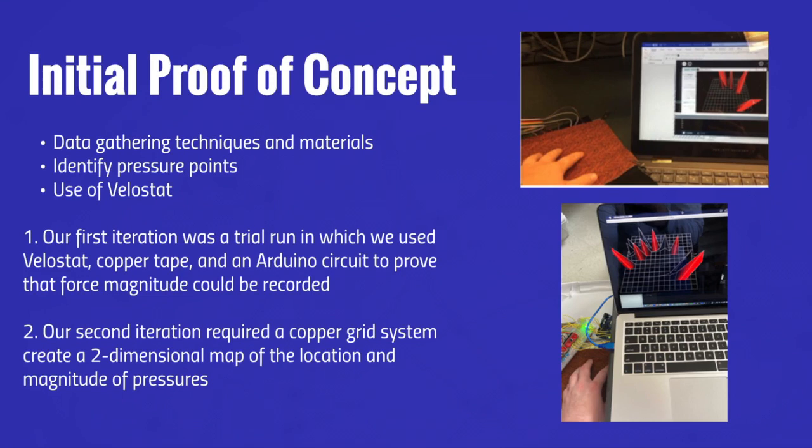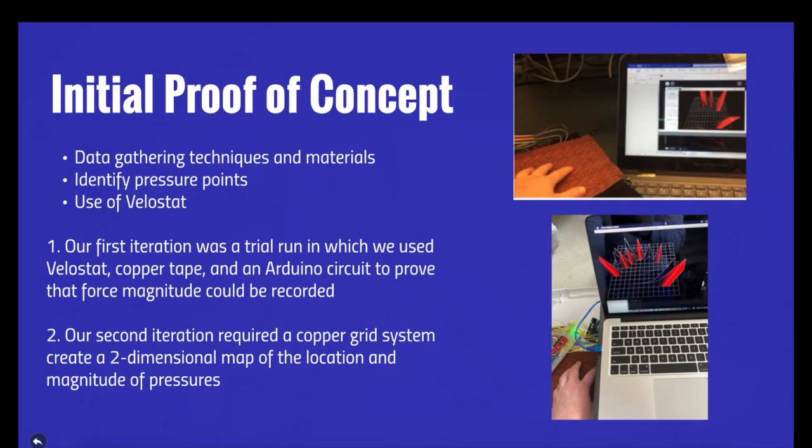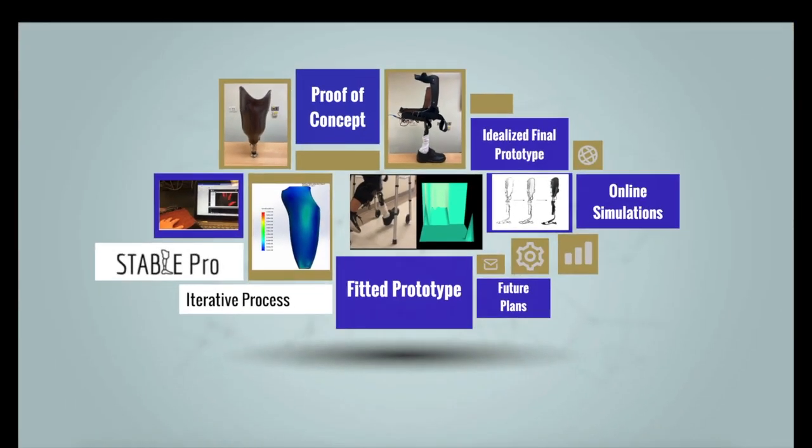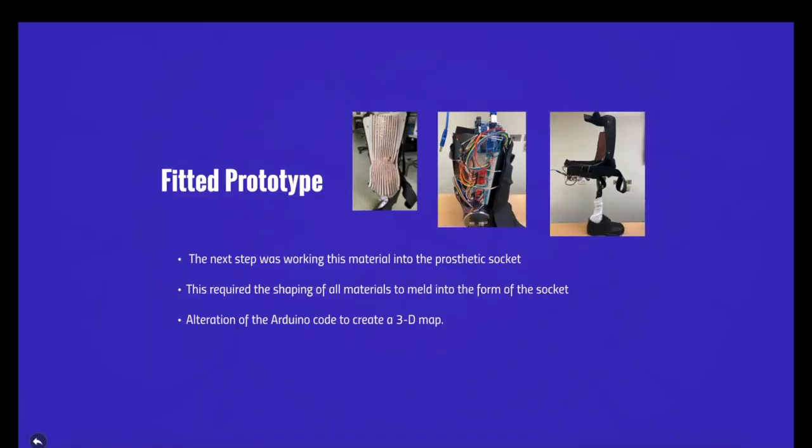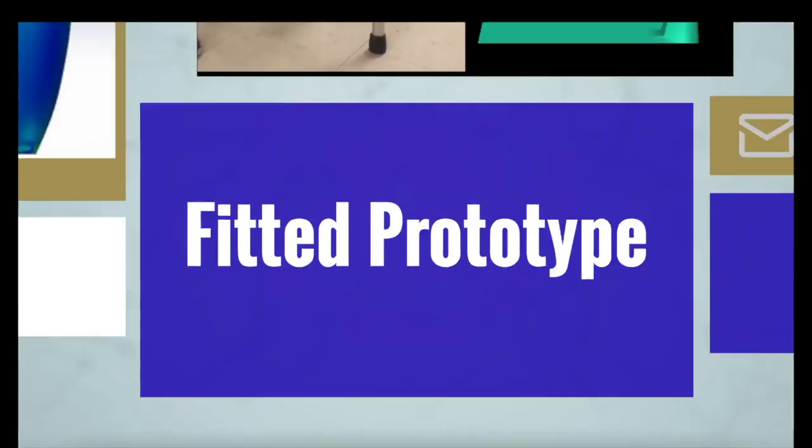Our first iteration was just a trial run in which we used Velostat, copper tape, and an Arduino circuit to prove that force magnitude could be recorded. Our second iteration required a copper grid system and an advanced Arduino code to create a two-dimensional map of the location and magnitude of pressures exerted upon the Velostat. The next step was converting this 2D surface into the 3D prosthetic. This required the shaping of all materials into the form of the socket, as well as the alteration of the Arduino code to create a 3D map.